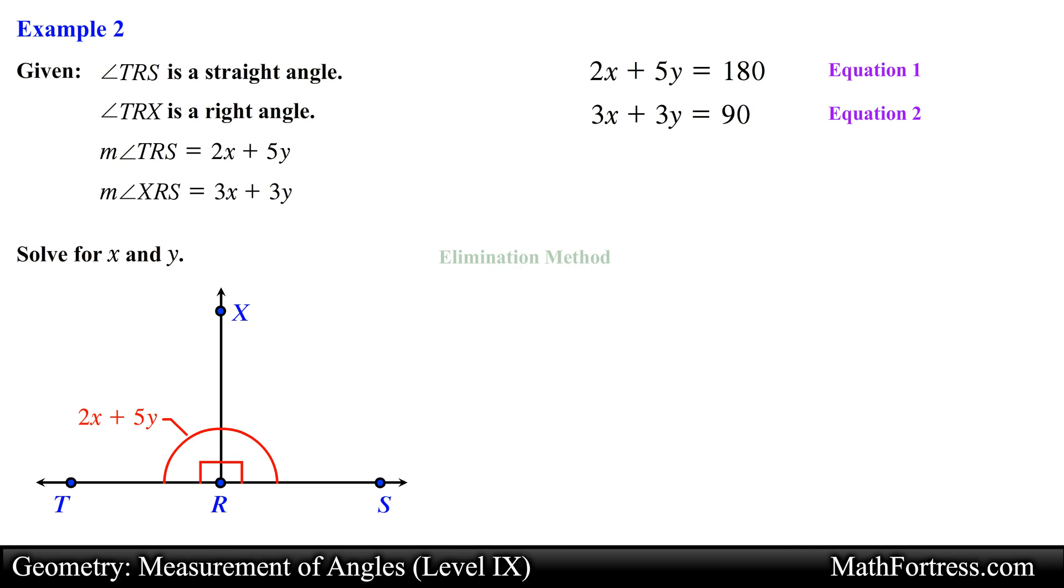We are going to use the elimination method. In this case we will eliminate the variable x. So we need to multiply the first equation by 3 and multiply the second equation by negative 2. Doing that we obtain the following. Next we go ahead and add the equations.